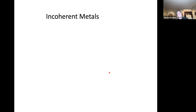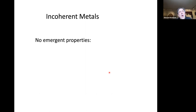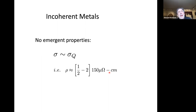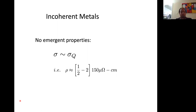Let me forget that I know any solid state physics and ask: what would I expect if I had a metal with no emergent properties whatsoever? No quasiparticles, no long mean-free path, no emergence — nothing other than dimensional analysis. What I would expect is that the conductance should be on the order of the quantum of conductance. My prediction is that anything without a reason to have something else will have a resistance in the range between one-half to two times 150 micro-ohm centimeters. That's my theory of incoherent metals.